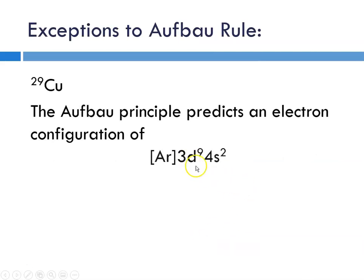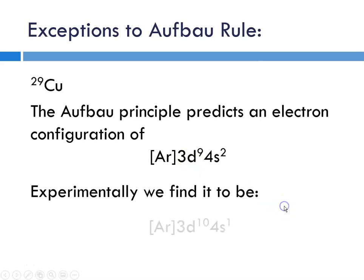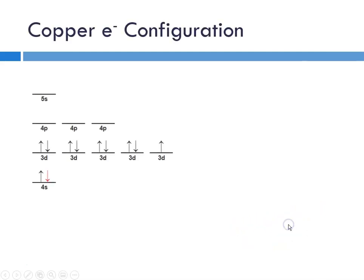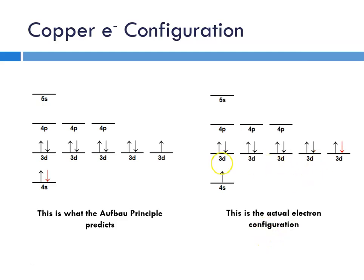Similar thing happens with copper. The Aufbau principle predicts 3d9 4s2, and experimentally we find 3d10 4s1. Apparently, it's more stable to have one of the s electrons migrate up to the d level. Here is what would be predicted for copper, and here is what the actual configuration is. Again, one of the s electrons ends up in a d sublevel, filling that sublevel.